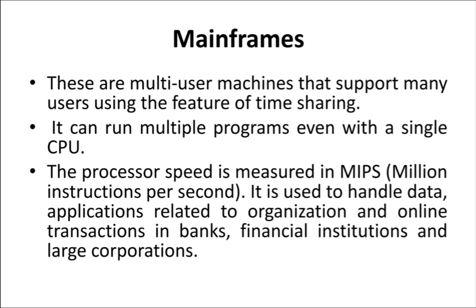The mainframe can run multiple programs even with a single CPU. Its processor speed is measured in MIPs — million instructions per second. Comparatively, the mainframe is less powerful than the supercomputer. It is used to handle data applications related to organizations and online transactions in banks, financial institutions, and large corporations.